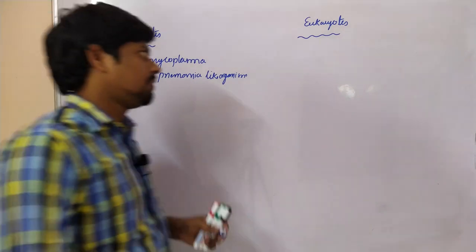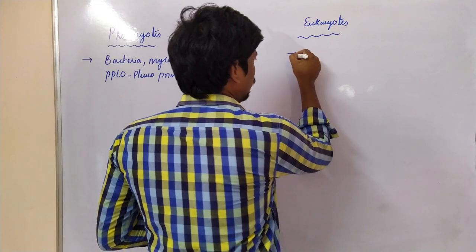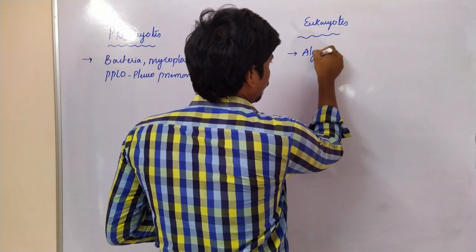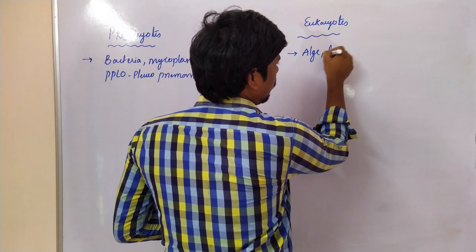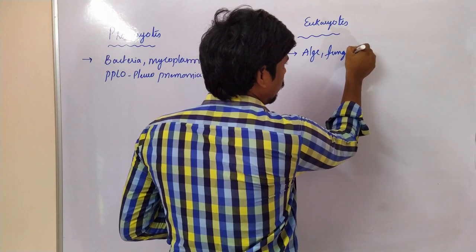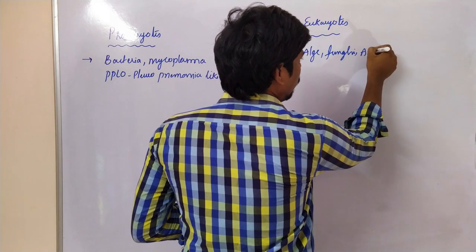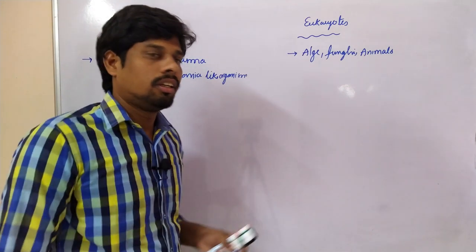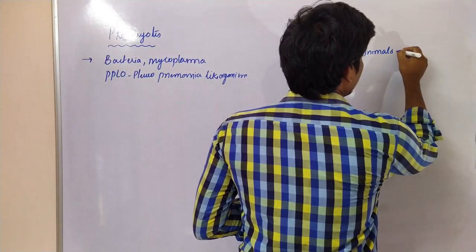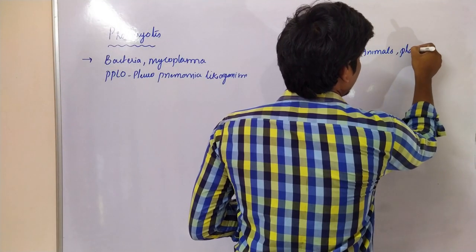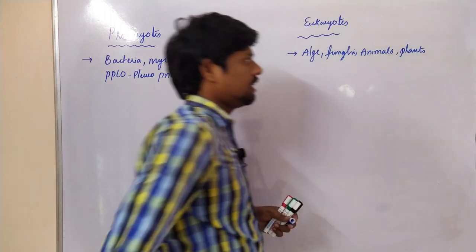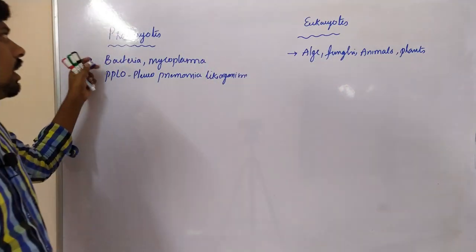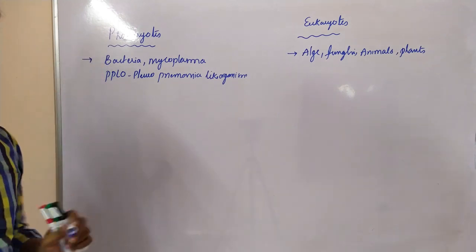Coming to the eukaryotes, we all are eukaryotes. It includes algae, fungi, all animals including humans, and also plants. These are the examples that come under eukaryotes, and those are the prokaryotes.